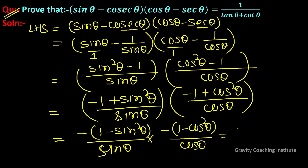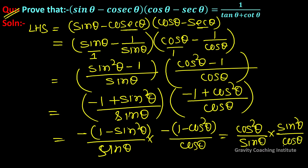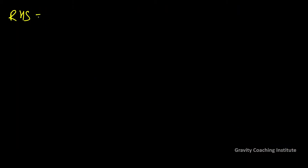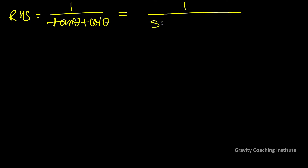With minus times minus giving plus, this becomes (1 - sin²θ)/sin θ times (1 - cos²θ)/cos θ, which simplifies to cos²θ/sin θ times sin²θ/cos θ. The squares cancel, leaving cos θ times sin θ. So LHS equals cos θ·sin θ.